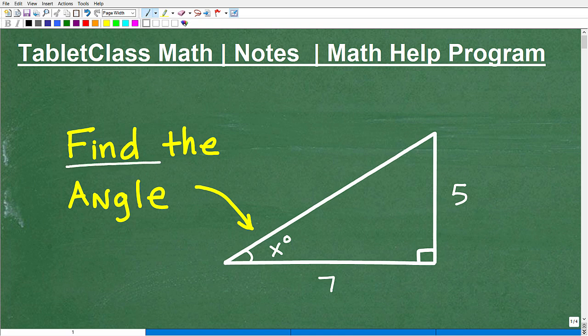Okay, let's go ahead and find the angle of this triangle. So we're given a triangle, and it's a particular type of triangle, and the information that we have is the length of this leg and the length of this leg, but we want to find the angle, the missing angle here.